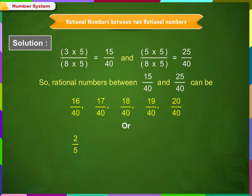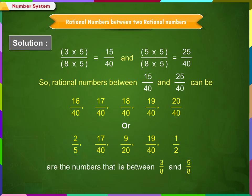Or, 2/5, 17/40, 9/20, 19/40, 1/2 are the numbers that lie between 3/8 and 5/8.